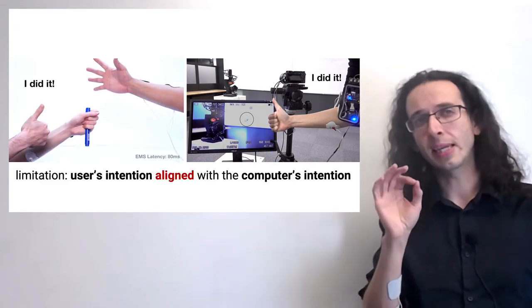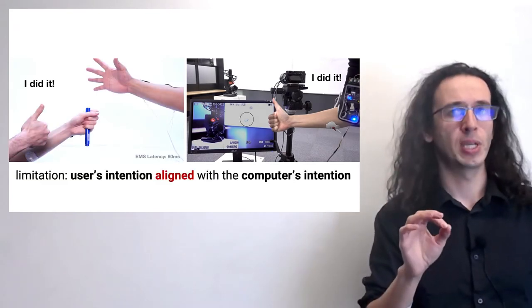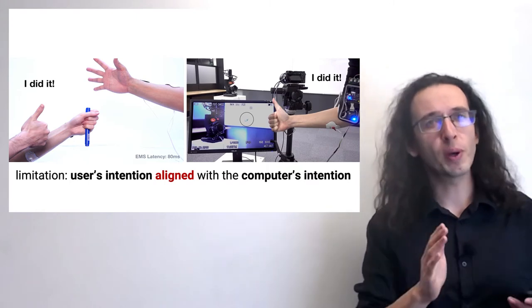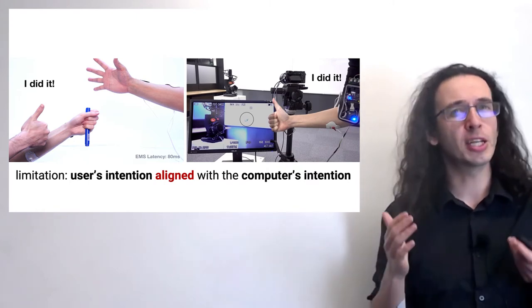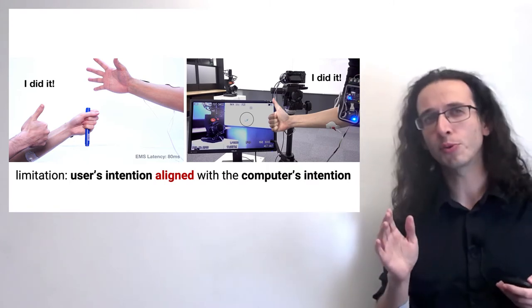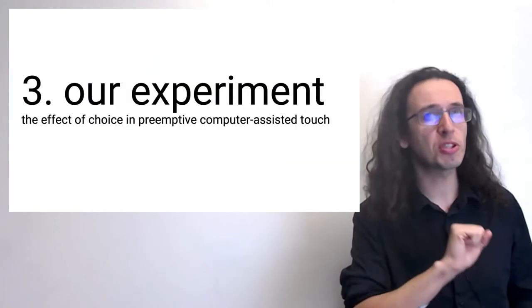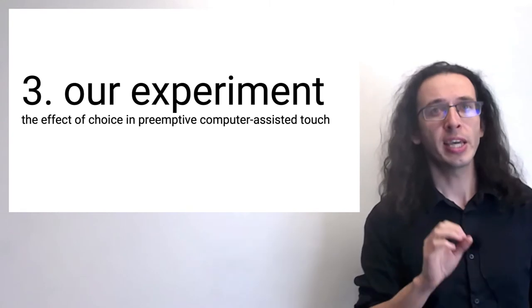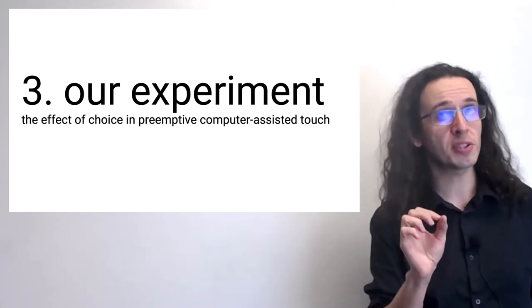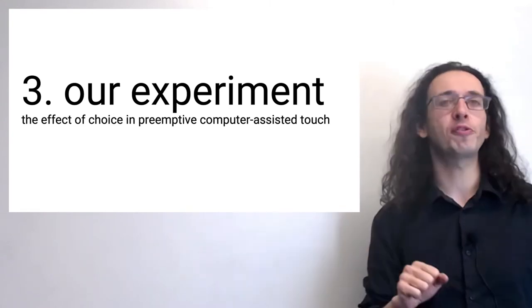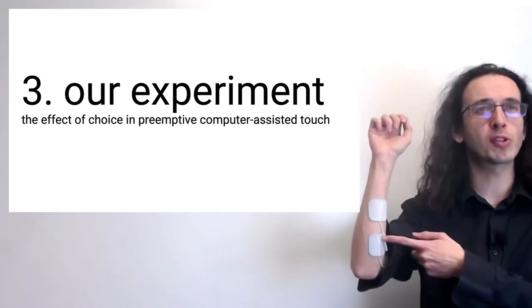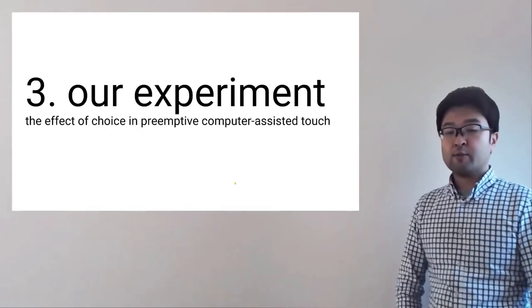Now this study had a key and big limitation. The user's intention was always aligned with the computer's intention. In other words, the user and the computer wanted the same thing. There was no choice. This is precisely what we tackle in today's paper, in which we examine the effect of choices by the user in their feeling of agency during these preemptive computer-generated touches.